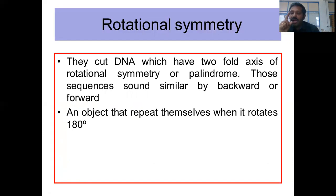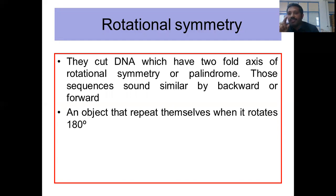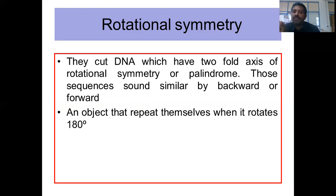For reference: onefold means an object repeats when rotated 360 degrees; threefold means it repeats at 120 degrees. For restriction sites, twofold axis of rotational symmetry means the restriction site reads the same whether you read it forward or backward — these are called palindromes.